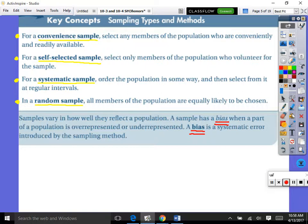So for a systematic sample, you order the population in some way and then select from it at regular intervals. For example, if I had a phone book and I said I'm going to call every third person in the phone book. You see how that's a system? Coming up with a system. In a random sample, all members of the population are equally likely to be chosen. There's no system, it's just random.